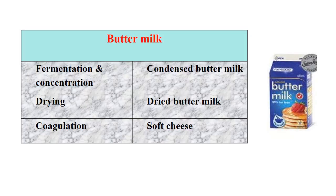Here we will see the utilization of buttermilk. By fermentation we can make buttermilk, by drying we can make dried buttermilk, and by coagulation we can make soft cheese.